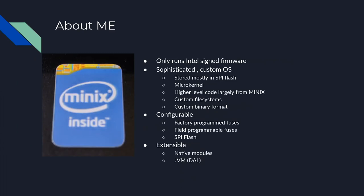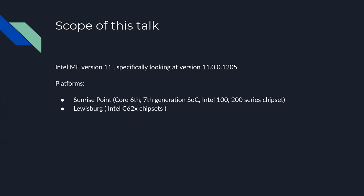On the software side, it runs a custom operating system, parts of which are taken from Minix, the teaching operating system by Andrew Tanenbaum. It's a microkernel operating system that runs binaries in a completely custom format. It's a really quite high-level system. In terms of the OS it runs, it's mostly like Unix, which makes it kind of familiar, but it also has large custom parts. This talk covers sixth and seventh generation Intel Core chipsets, including the Lewisburg server version and laptop SoCs.